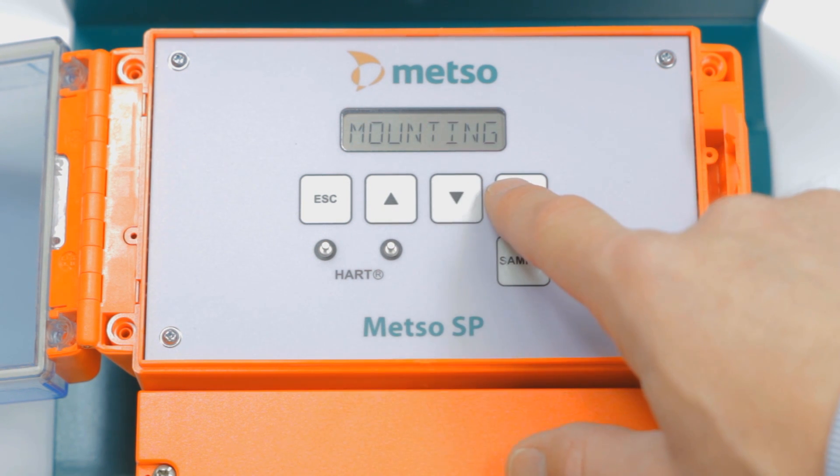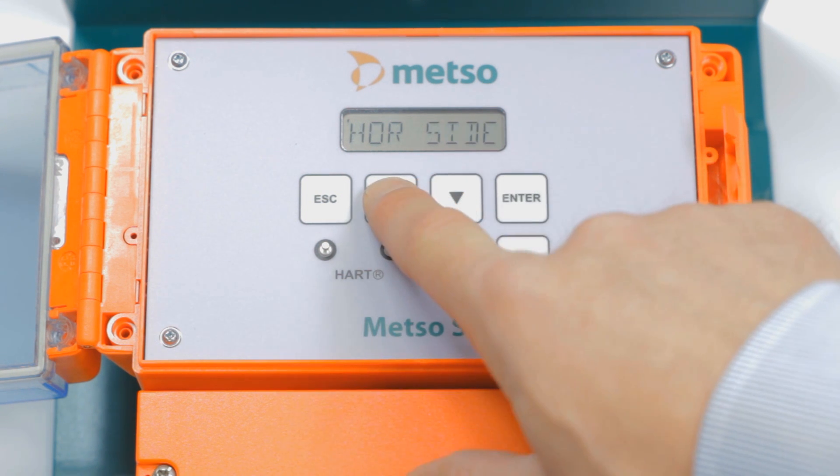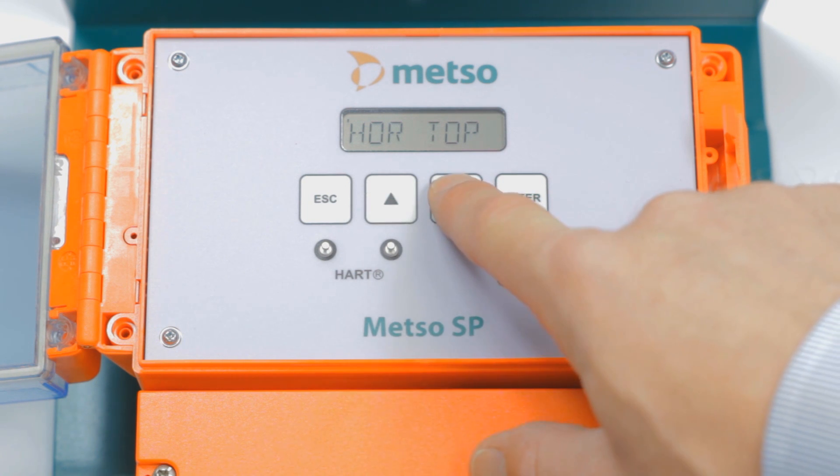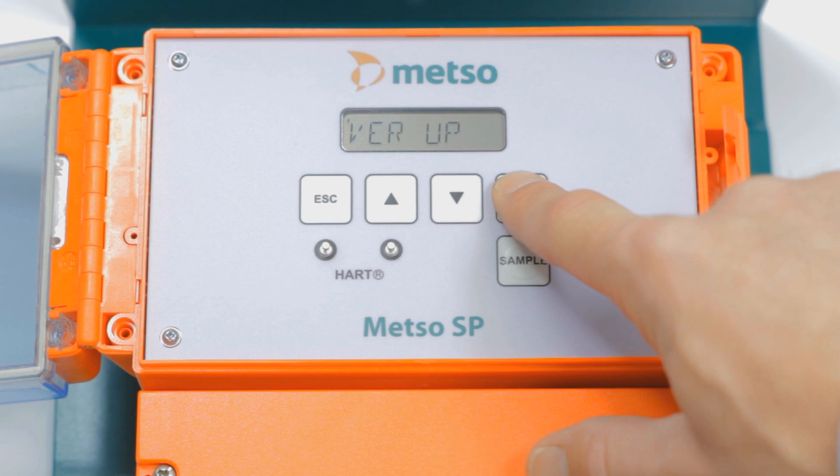Mounting, very important. If we hit enter, it's vertical up. There are other options. For example, horizontal side, horizontal top, depending on the mounting of the SmartPulp in the pipe. In our case, we're in vertical up, so we accept that.